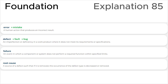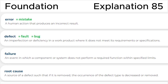Let's look at definitions in the ISTQB glossary. A mistake or error is a human action that produces an incorrect result. A defect, fault, or bug is an imperfection or deficiency in a work product where it does not meet its requirements or specifications. A failure is an event in which a component or system does not perform a required function within specified limits.